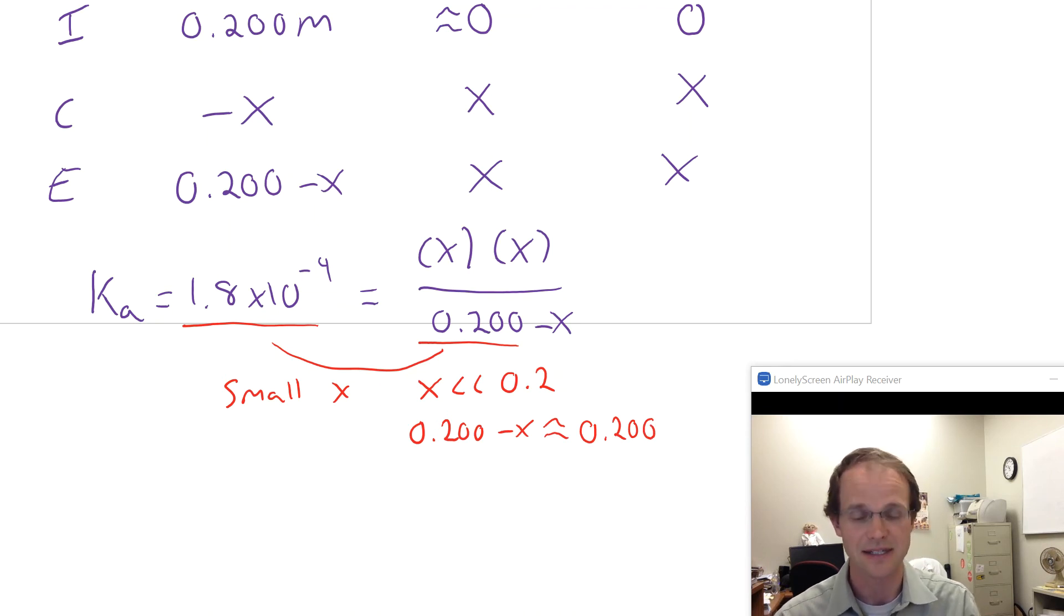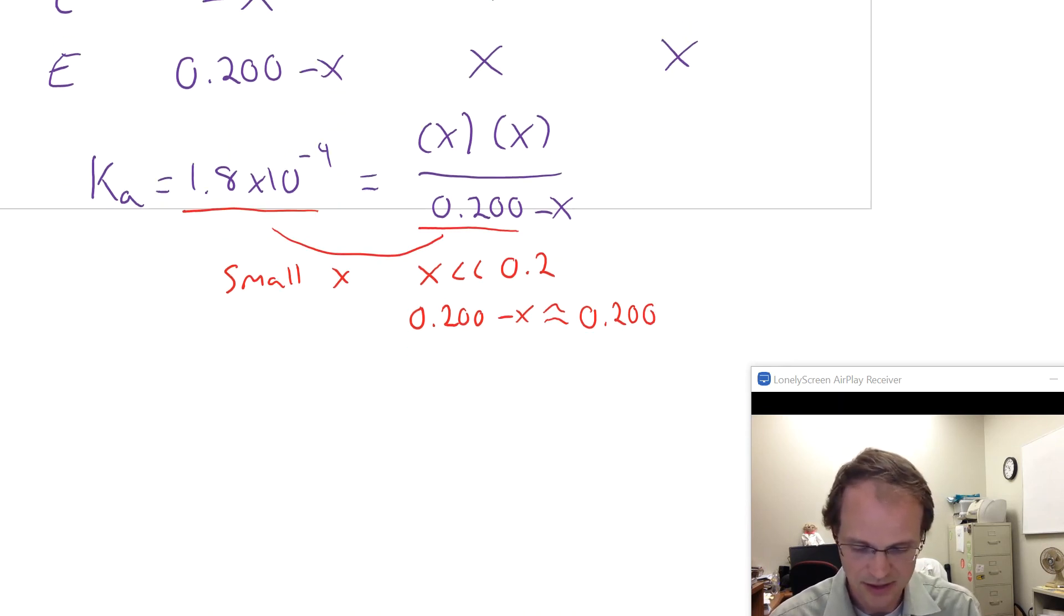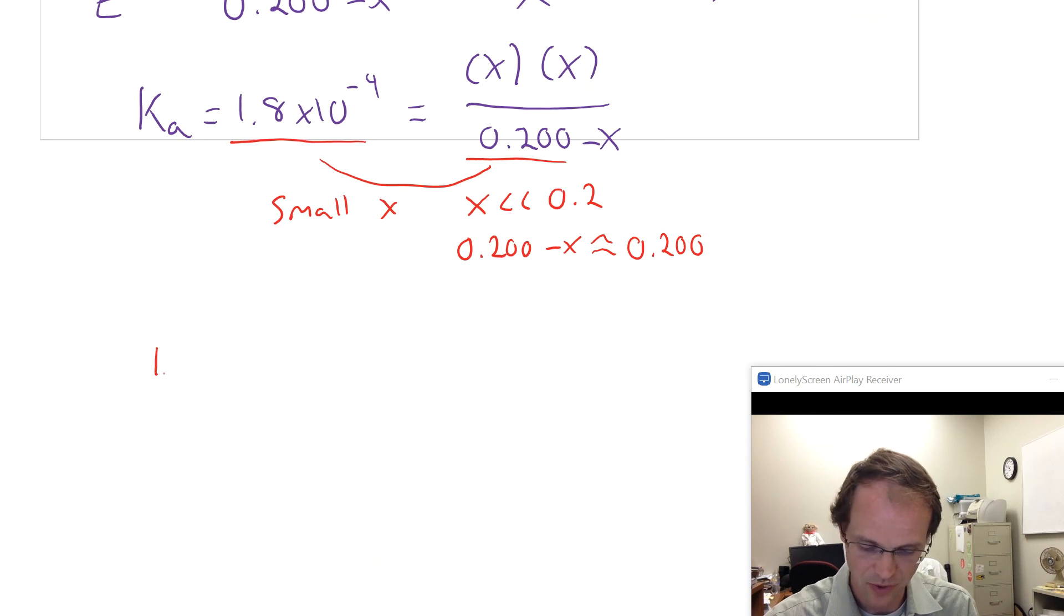So what do we have? We have 1.8 times 10 to the minus 4th is going to be X squared over 0.200.